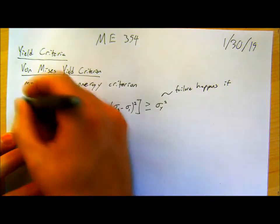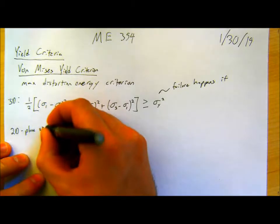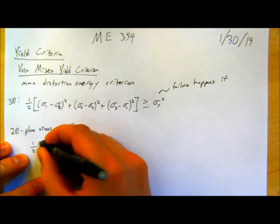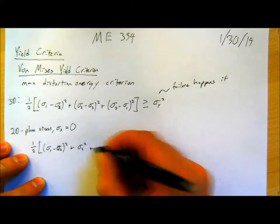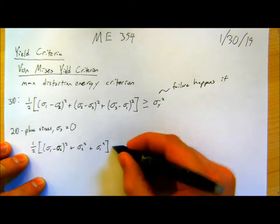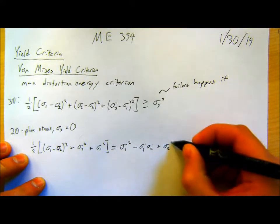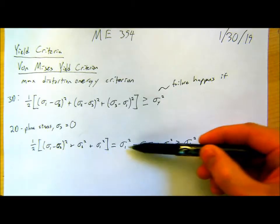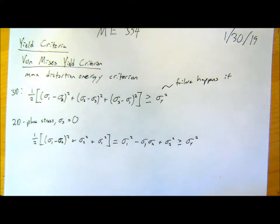For 2D — specifically a state of plane stress where sigma3 is equal to zero — this becomes one-half times: sigma1 minus sigma2 squared, plus sigma2 squared, plus sigma1 squared, which we can write as sigma1 squared minus sigma1 times sigma2 plus sigma2 squared, and that's greater than or equal to sigma yield squared. So failure happens in two dimensions when this condition is true in terms of our principal stresses. I'll go through some examples of what this actually means for a general stress state on a material.